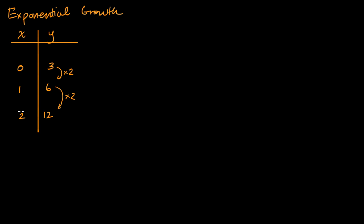This right over here is exponential growth. And you could even go for negative x's. When x is negative one, well if we're going back one in x, we would divide by two. So this is going to be three halves. And notice if you go from negative one to zero, you once again keep multiplying by two.